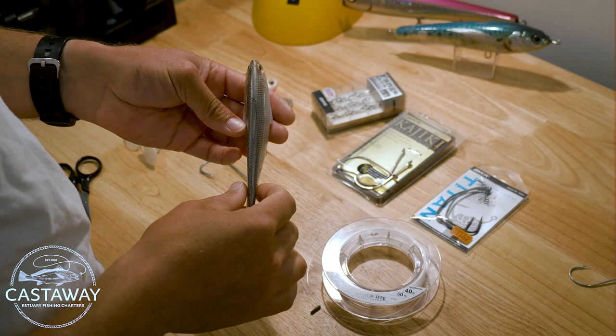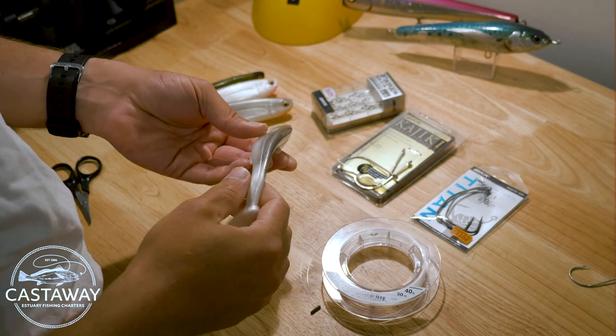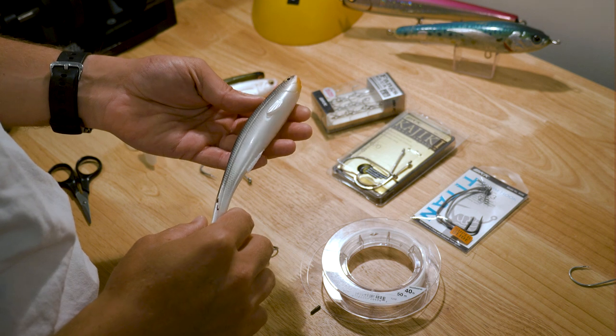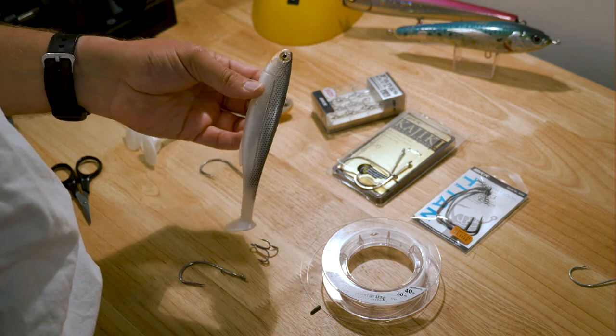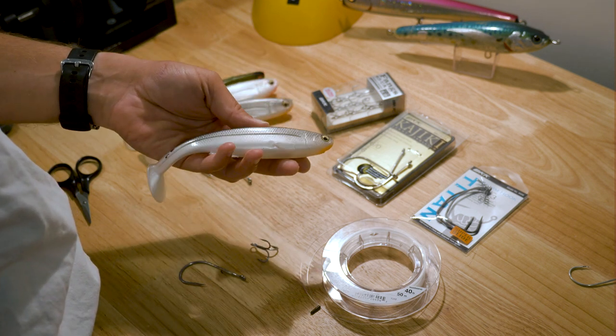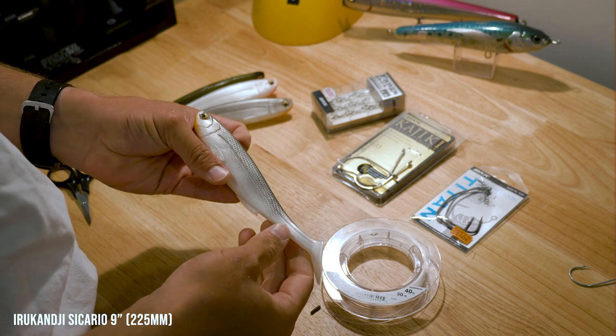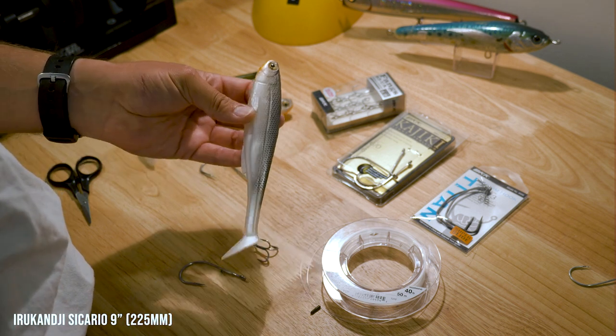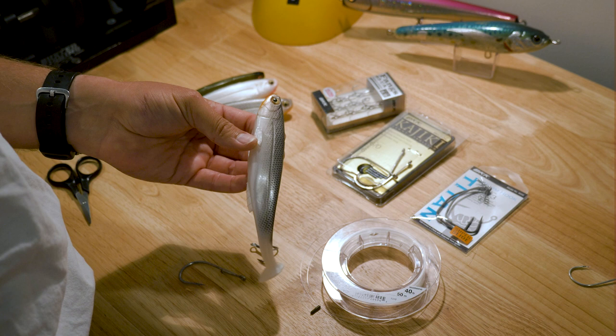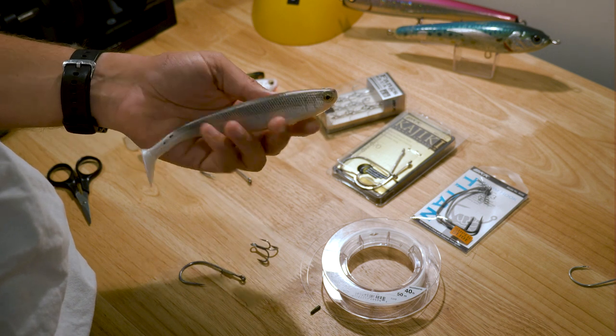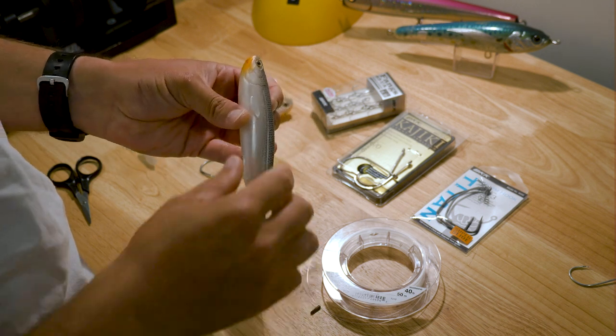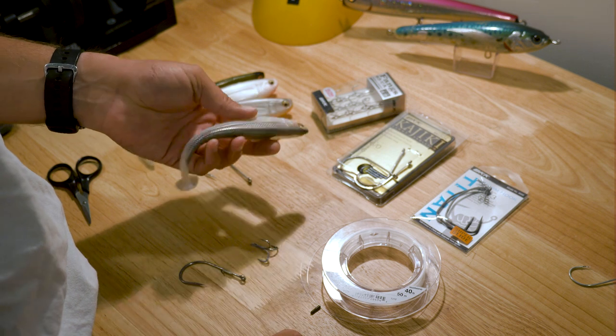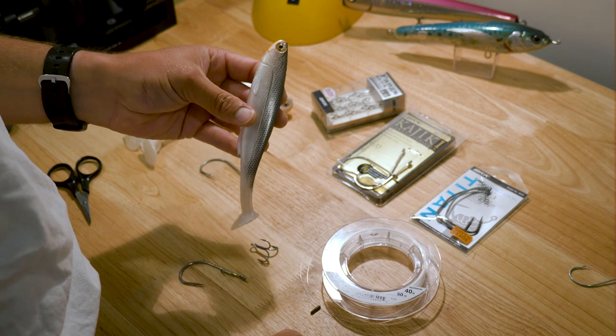I'm rigging a few big soft plastics for Castaway. These are a big paddle tail, an Irukandji Sicario. I haven't actually used these a lot but I've tested them and they're just about perfect for casting into the shallows and slow rolling them over the flats and around structure. So I'm just going to show you how I like to rig them.